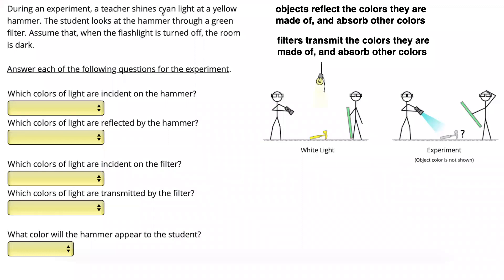In this problem, we have a teacher who shines a cyan light at a yellow hammer. The student then looks at the hammer through a green filter. We can see that depicted in the diagram over here. The teacher is shining that cyan light onto the hammer. The student is then looking through that green filter at the hammer. And it also tells us when the flashlight is turned off, the room is dark.